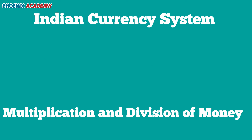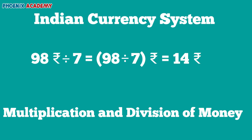Let's see how to divide rupees. Division of rupees and paisae by a number is done like division of a number by a number. Divide 98 rupees by 7. We divide 98 by 7 and we will get 14. So after dividing 98 rupees by 7, we will get 14 rupees.